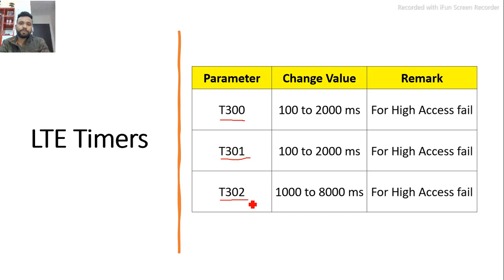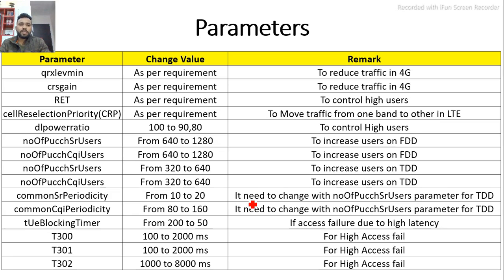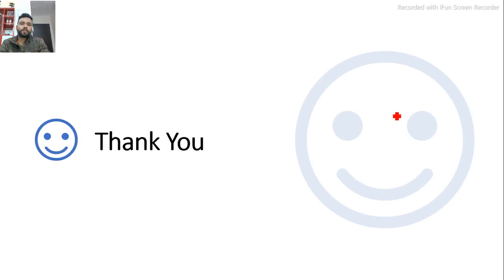I have now discussed more than 15 parameters. If you are asked about how to improve accessibility KPI in an interview and can answer with these many parameters, the interviewer will be very impressed. Keep a snapshot of the parameter table shown in this video for reference. Thank you for watching. If you found this video valuable, please leave a comment or a like so it can reach more people.